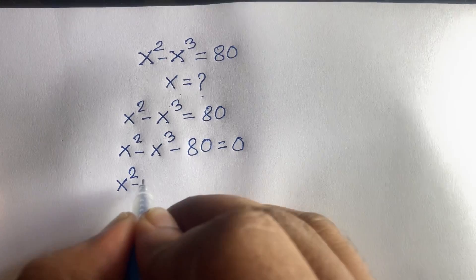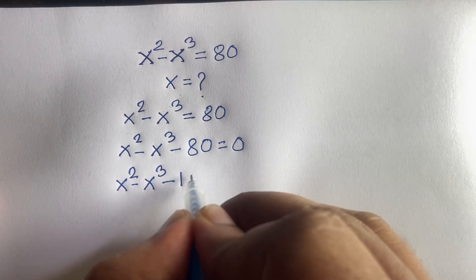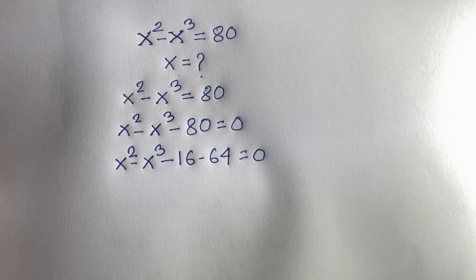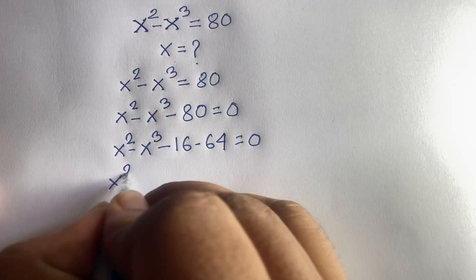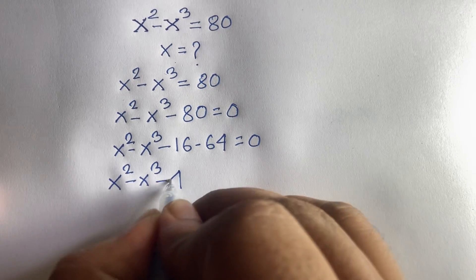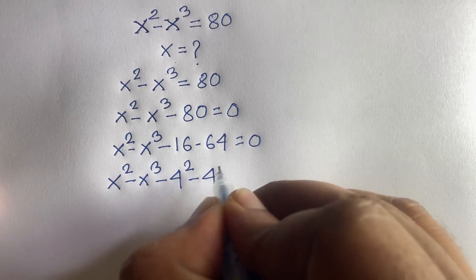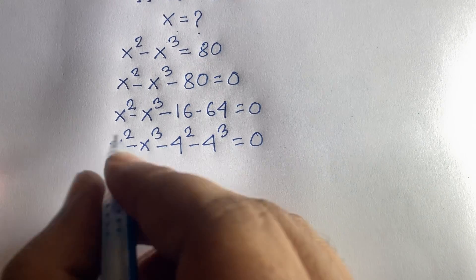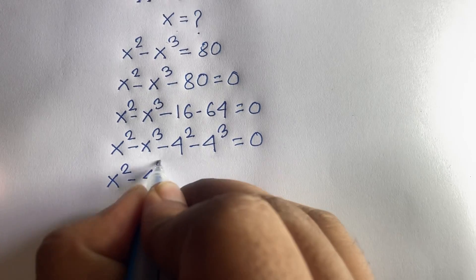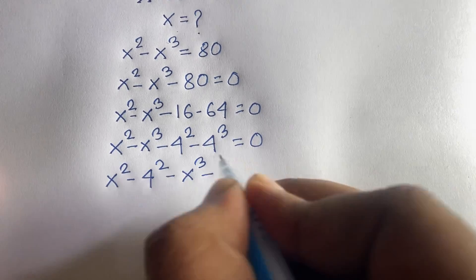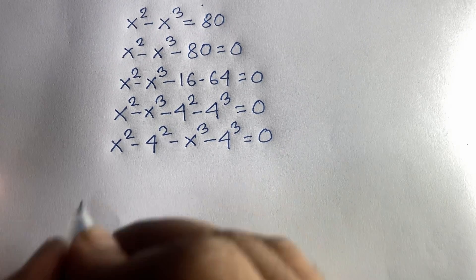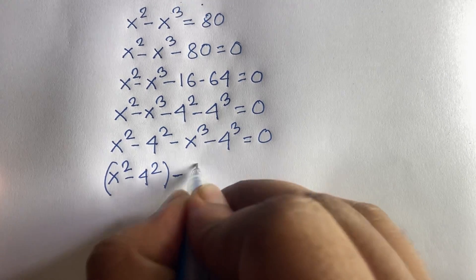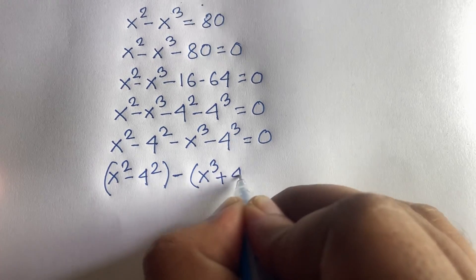Now 80 can be written as 64 minus 16, since 16 minus 64 equals minus 80. So 16 is 4 squared and 64 is 4 to the power 3. This gives us x squared minus 4 squared, minus the quantity x cubed minus 4 cubed, is equal to zero.